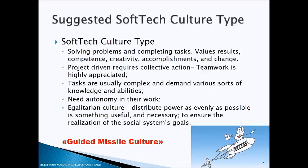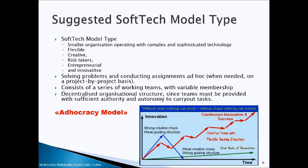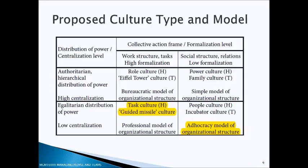For SoftTech, the suggested culture type is a guided missile culture. SoftTech is project-driven and very complex, so employees will need autonomy in their work. We're looking at an egalitarian culture type to distribute power as evenly as possible. The suggested model type is the adhocracy model — SoftTech operates with complex and sophisticated technology and needs to be flexible, creative, entrepreneurial and innovative, solving problems on an ad hoc or project-by-project basis. It consists of people working in teams with variable membership, so it's best to decentralise the organisational structure to give authority and autonomy to carry out tasks.